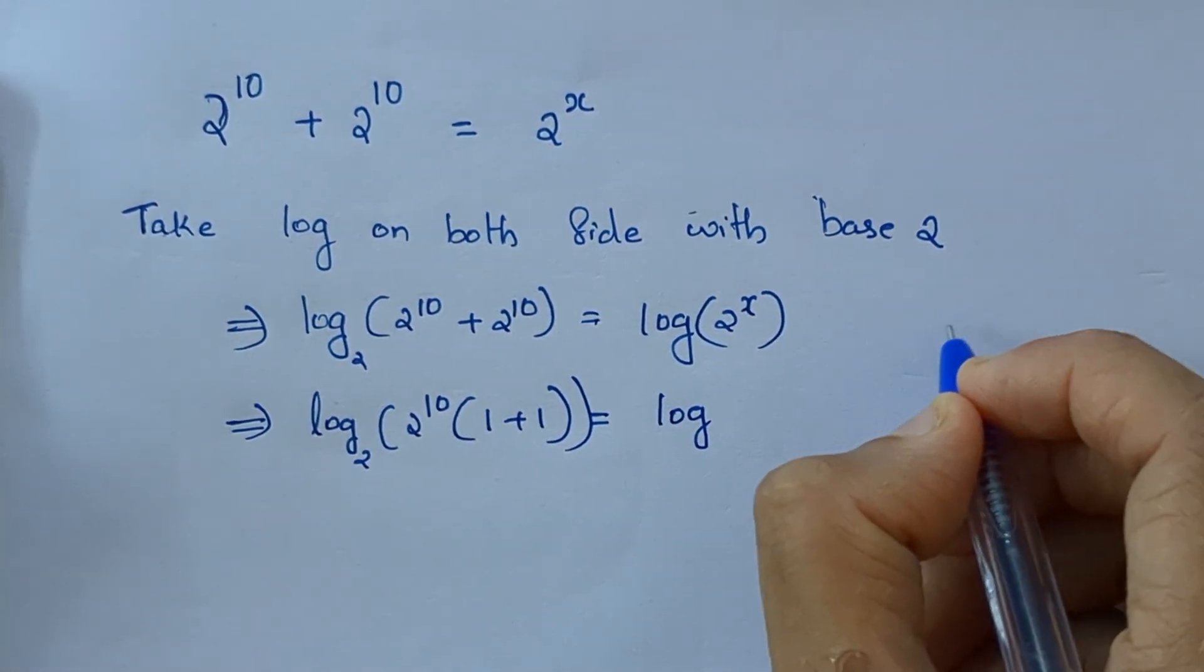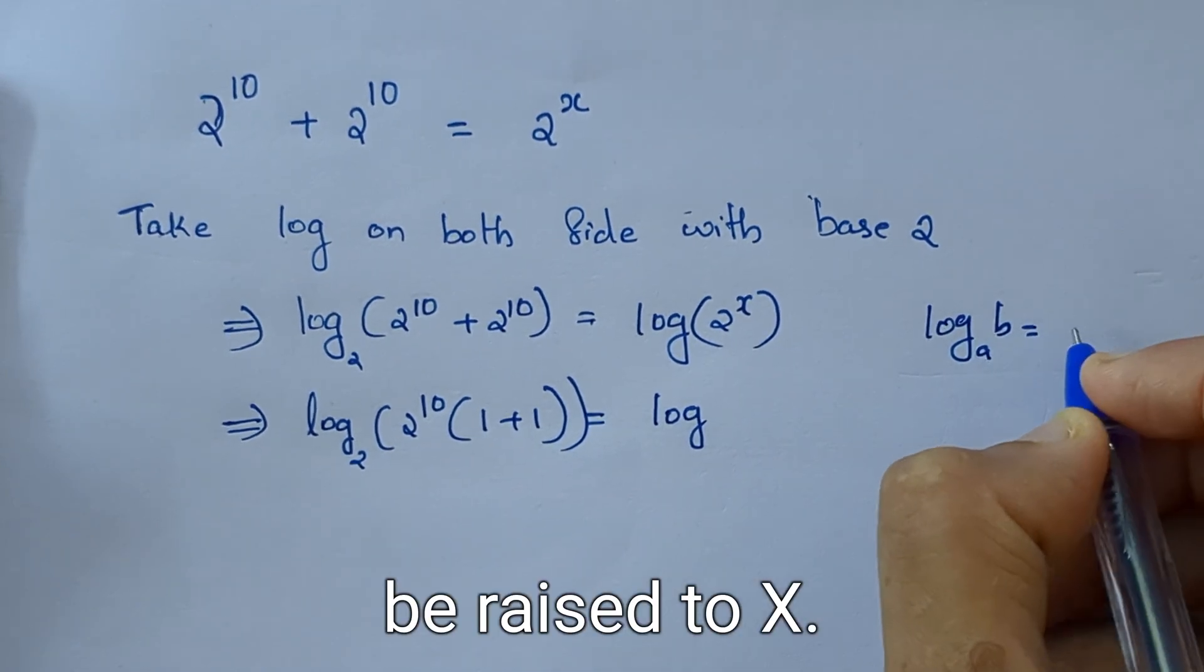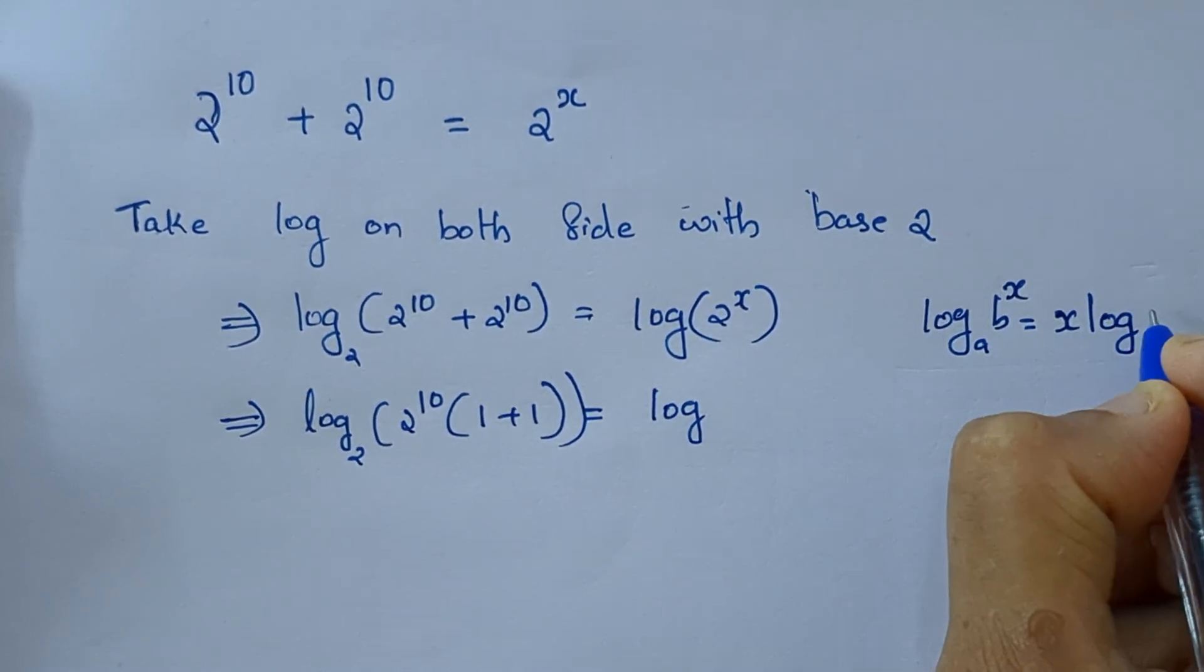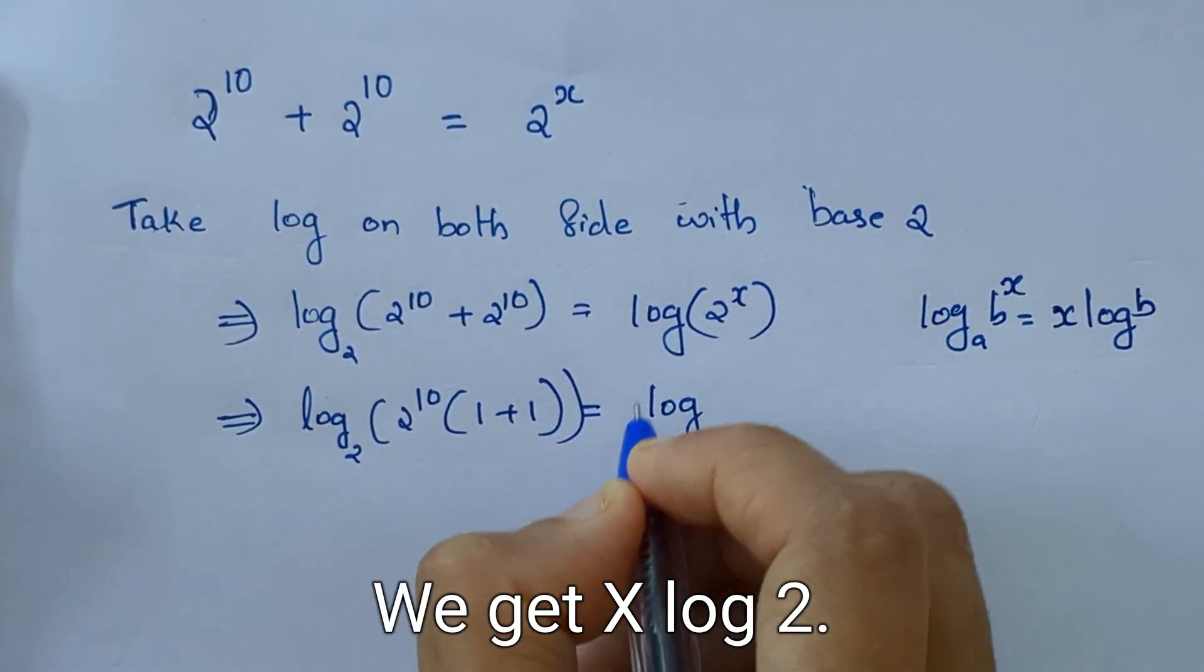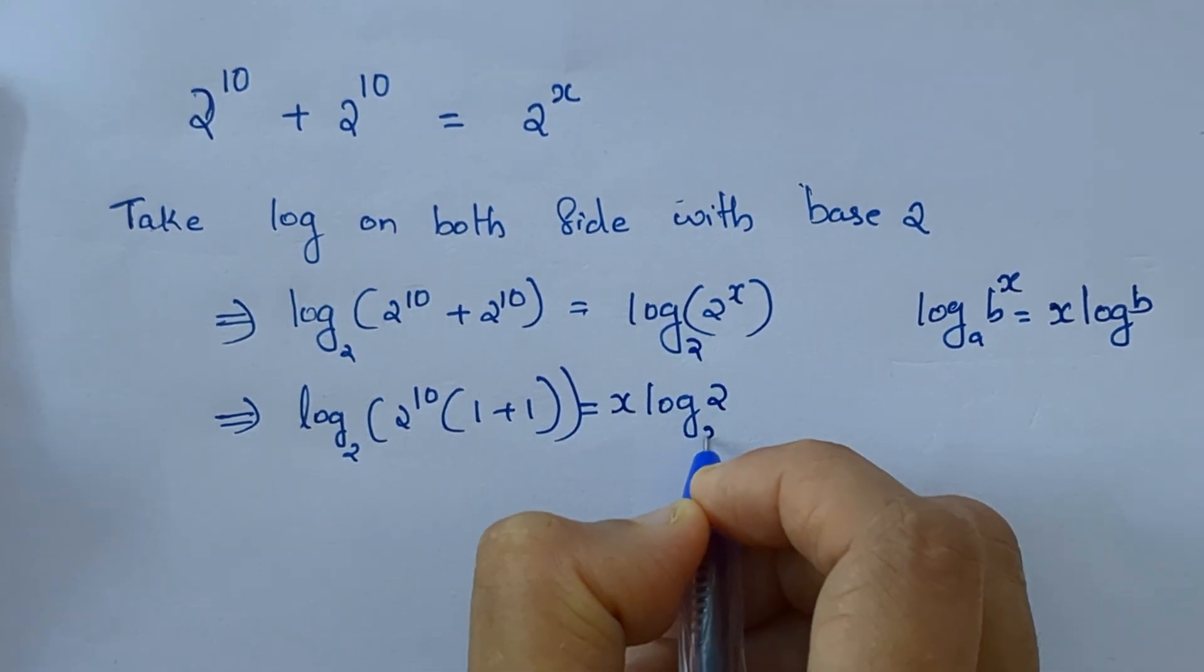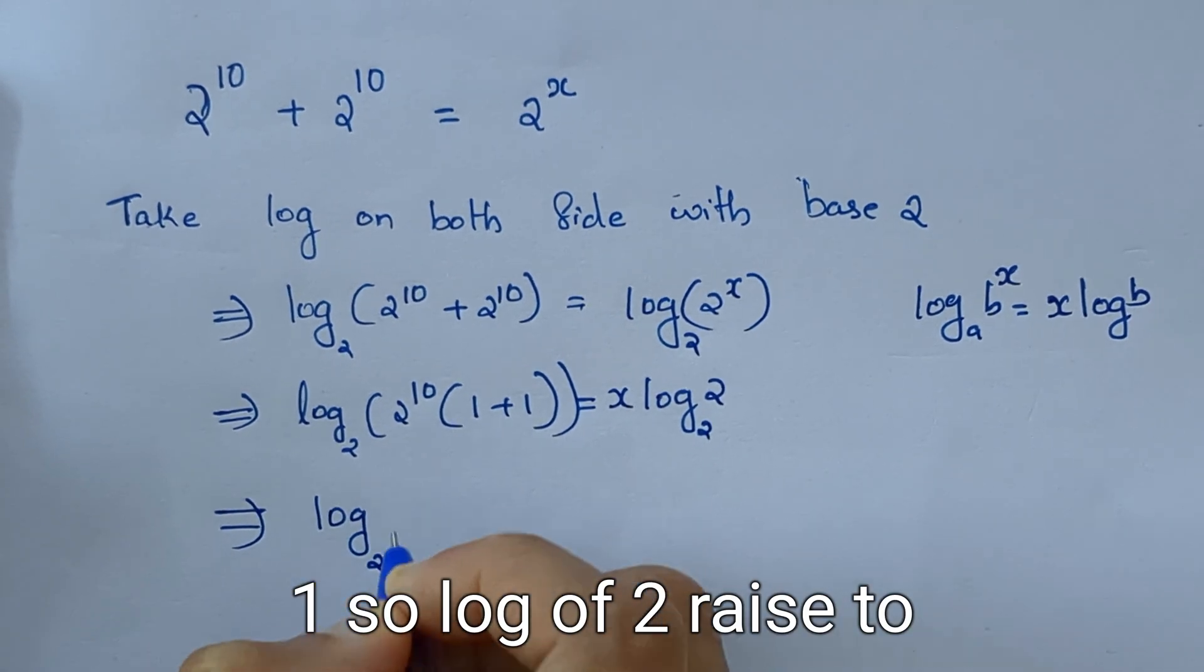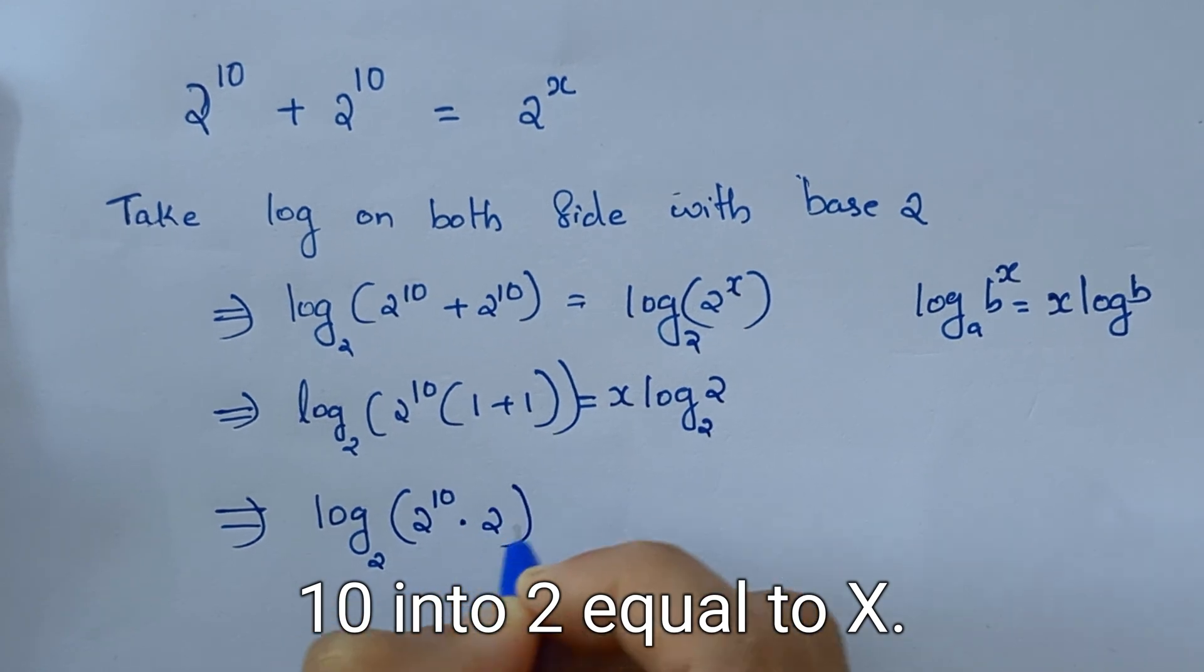Log of log b raised to X can be written as X log b, so applying this here we get X log 2. Log 2 to the base 2 is 1, so log of 2 raised to 10 into 2 equal to X.